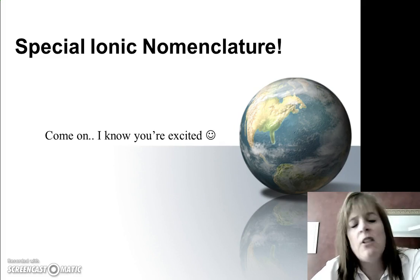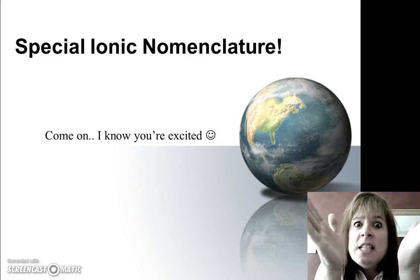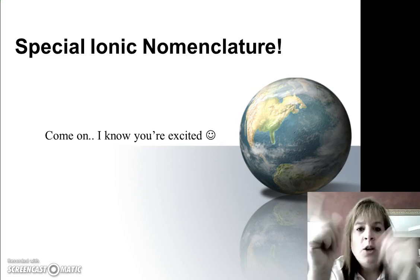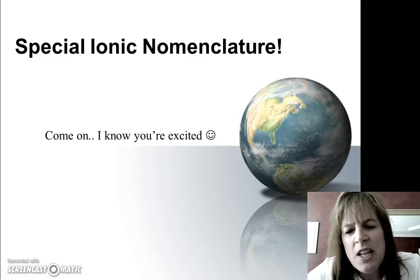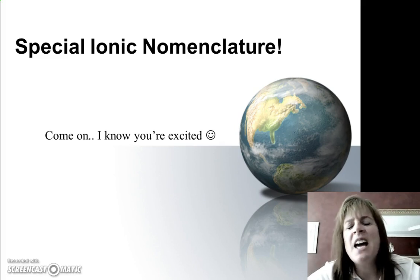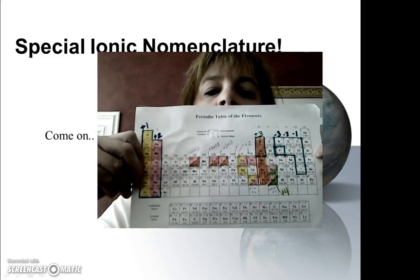Now in chapter 4, we did just regular ionic nomenclature, so you're probably wondering, Mrs. Campbell, what makes this ionic nomenclature special? Well, that's a great question. Special ionic nomenclature is for metals that kind of have an identity crisis. Alright, so let's take a look at your periodic table.